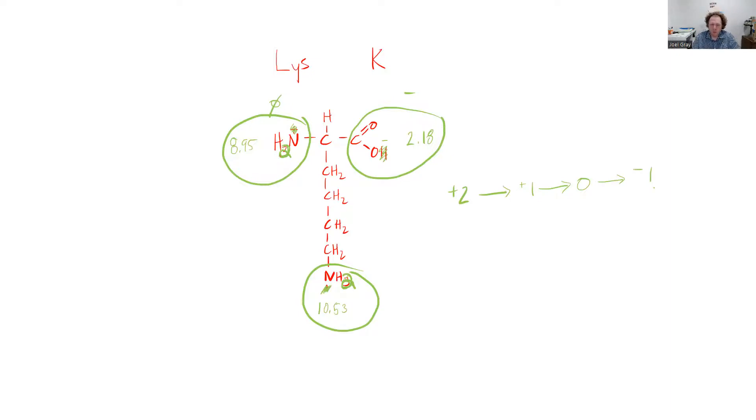So this molecule could never have a charge of +3. It could likewise never have a charge of -2. At a neutral pH, the most common form is probably going to be +1 or 0. But to determine that, what we need to do is figure out our pI.